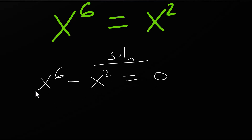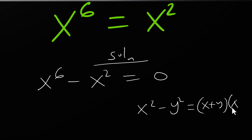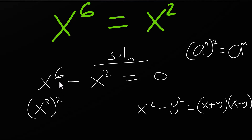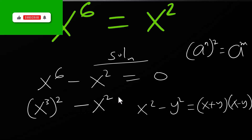Now I want to express this as a difference of two squares. When we have x squared minus y squared, that's the same as (x plus y)(x minus y). This side is not squared, so let me change this to x cubed squared. When you have a to the power n squared, that's the same as a to the power 2n. So x to the 6 is the same as (x cubed) squared, minus x squared equals zero.